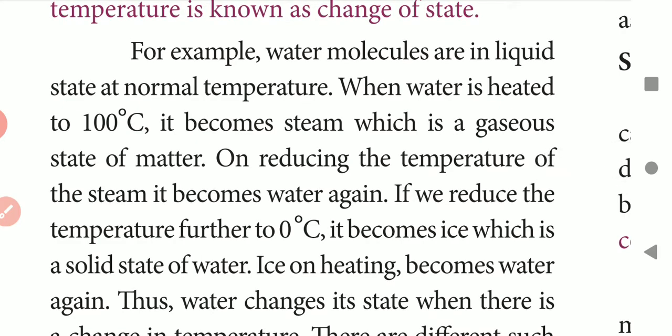For example, when water is heated at 100 degrees Celsius it will start to evaporate and become steam, which is a gaseous state of matter. On reducing the temperature of the steam it will become water again, and if you reduce the temperature further to 0 degrees Celsius, the water will convert to ice.